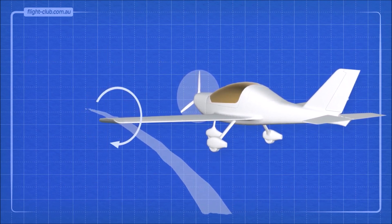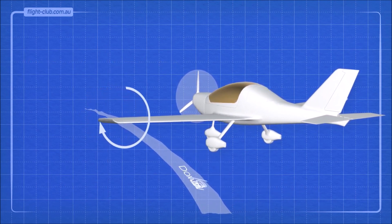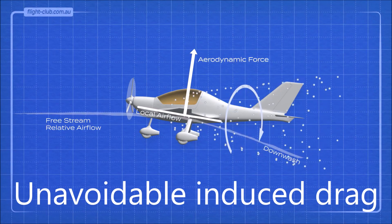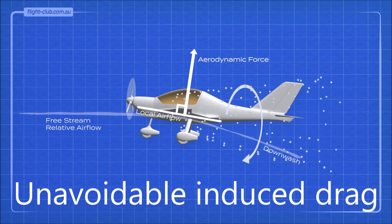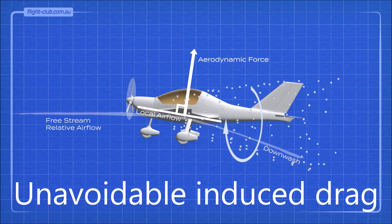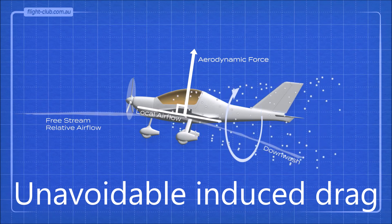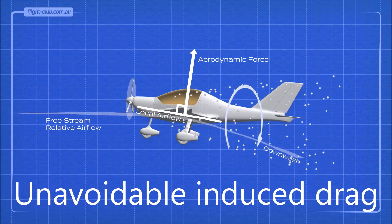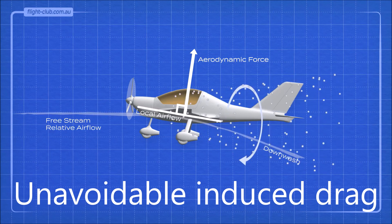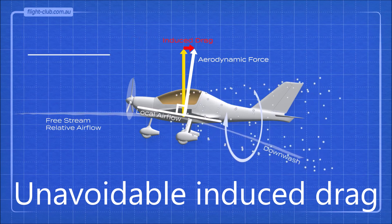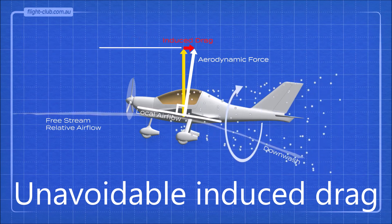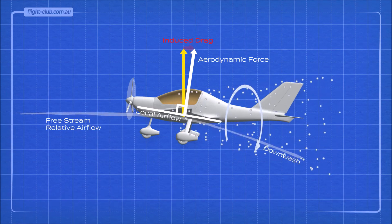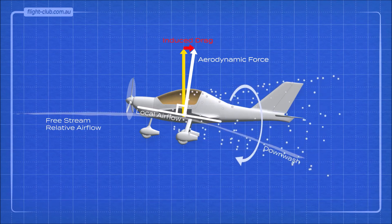The downward flow of the vortex deflects the relative airflow further down. The aerodynamic force produced by the wing acts at a right angle to the local airflow. But since the local airflow is inclined downwards, the aerodynamic force is inclined backwards by the same amount. A component of the lifting force acts parallel to the free stream relative airflow, and opposite to the direction of flight. This component acts in the same direction as the direction of drag.